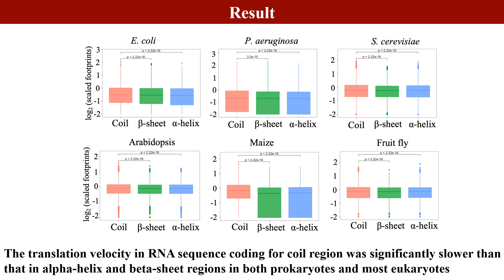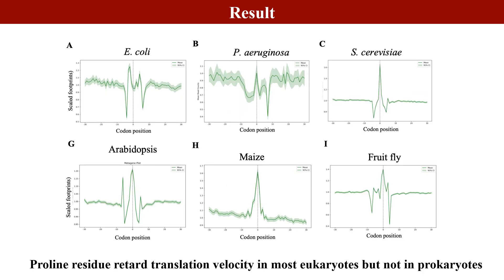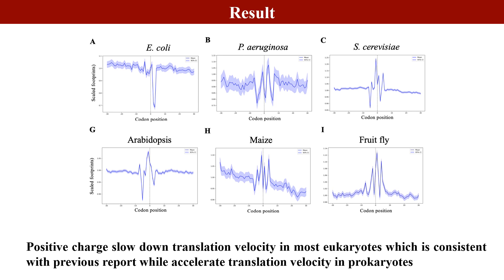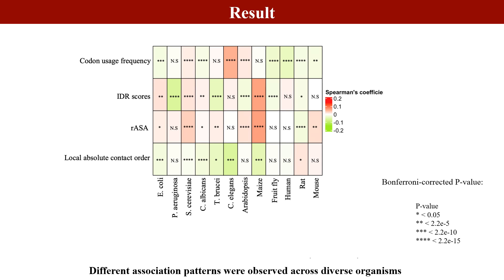By using the above pipeline, we found that the translation velocity in RNA sequences coding for coil regions was significantly slower than that in alpha helix and beta sheet regions in eukaryotes. In addition, we found that proline residues retard translation velocity in most eukaryotes but not in prokaryotes. Positively charged amino acids could slow down translation velocity in most eukaryotes, which is consistent with previous reports, whereas they accelerate translation velocity in prokaryotes. Moreover, different association patterns between protein structure features and translation velocity were observed across diverse organisms.